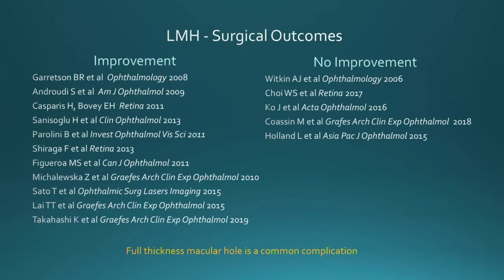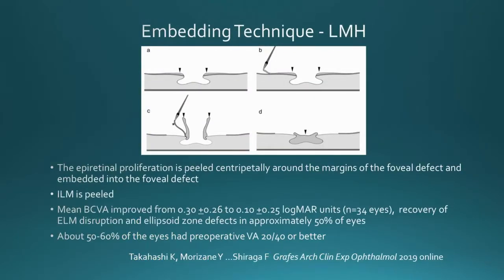If we search the literature, there is a disparity in improvement versus no improvement. It's not clear whether case selection had anything to do with the poor definition of lamellar macular hole. Throughout the literature, there is a common complication of full thickness macular hole. I wanted to point out a technique noted by Fumio Shiraga in Japan — he calls it embedding the epiretinal proliferation, where it's peeled centripetally around the margins of the foveal defect and then embedded into the foveal area, with the ILM also peeled. He had significant improvement of visual acuity, and in about 50% of eyes, the ellipsoid zone defects were improved.